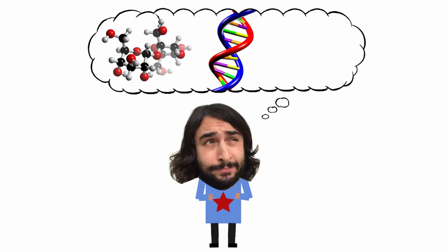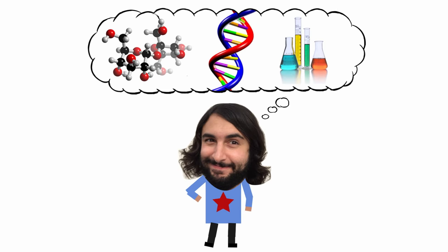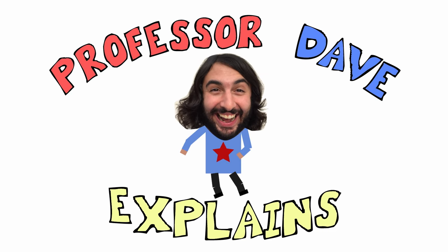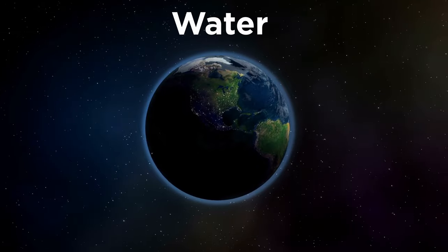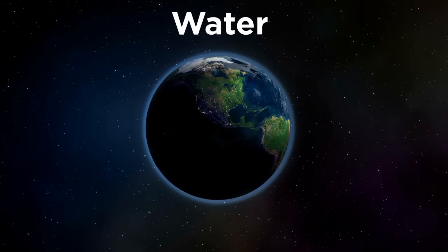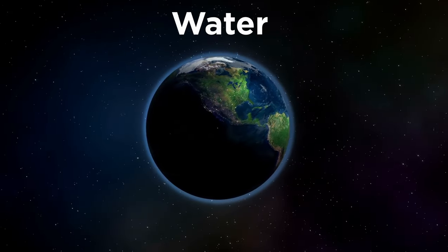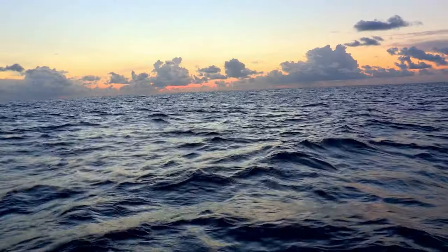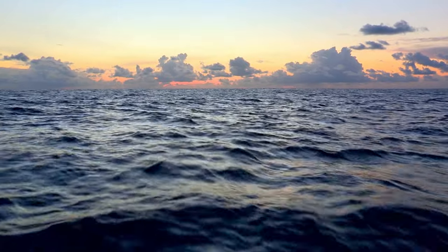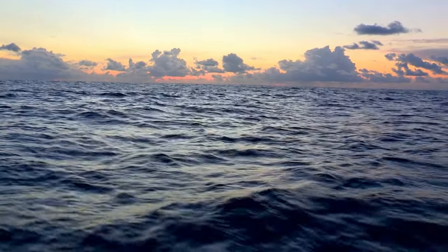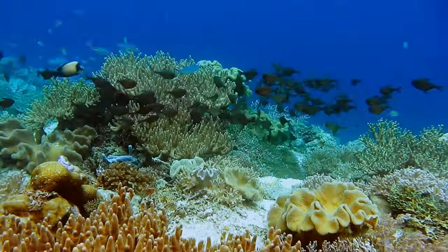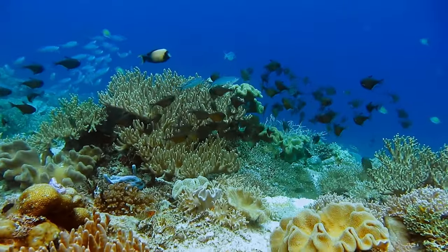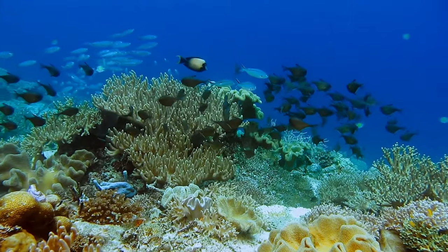Professor Dave Explains. Water is incredibly important to life on this planet as we know it, and it is quite abundant, covering 70% of the surface of the earth in the form of oceans, and is home to the majority of biological organisms on earth.